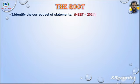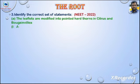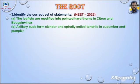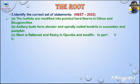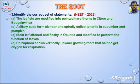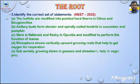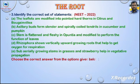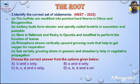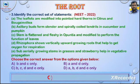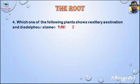Question 3: Identify the correct set of statements — asked in NEET 2022. A) The leaflets are modified into pointed hard thorns in Citrus and Bougainvillea. B) Axillary buds form slender and spirally coiled tendrils in cucumber and pumpkin. C) Stem is flattened and fleshy in Opuntia and modified to perform the function of leaves. D) Rhizophora shows vertically upward growing roots that help to get oxygen for respiration. E) Sub-aerially growing stems in grasses and strawberry help in vegetative propagation. Answer: Option C — B, C, D and E only.